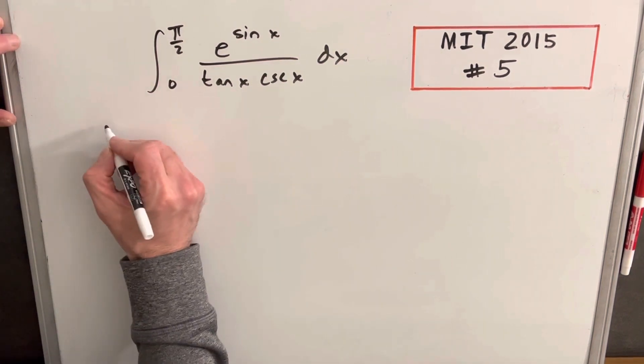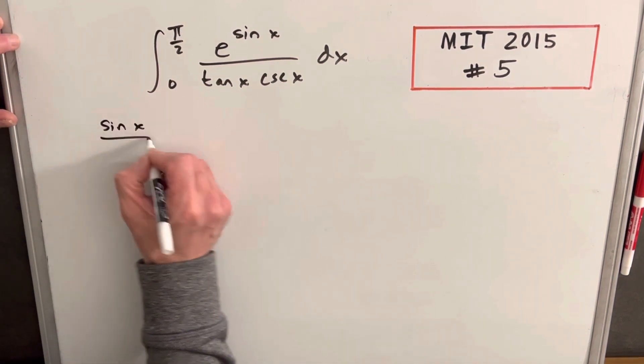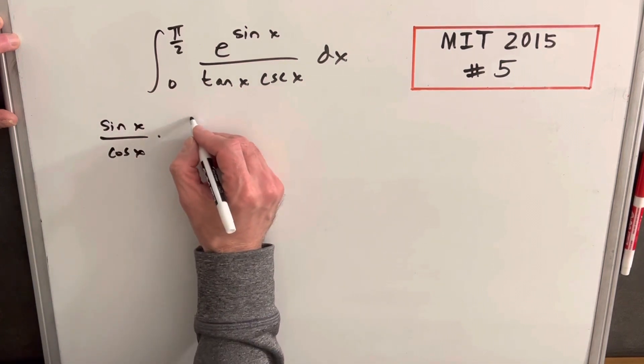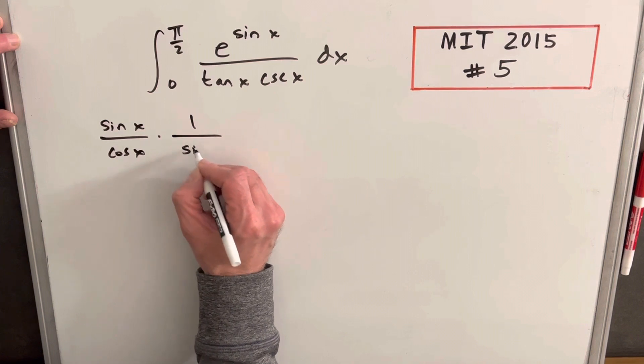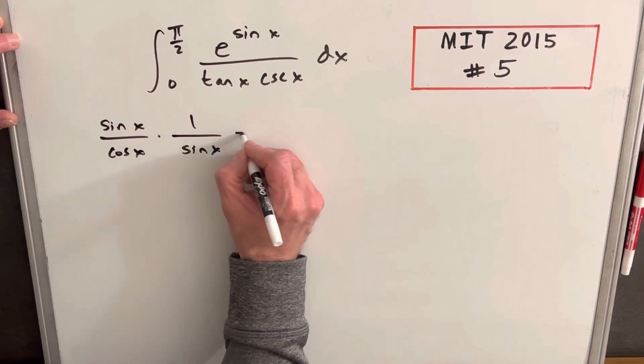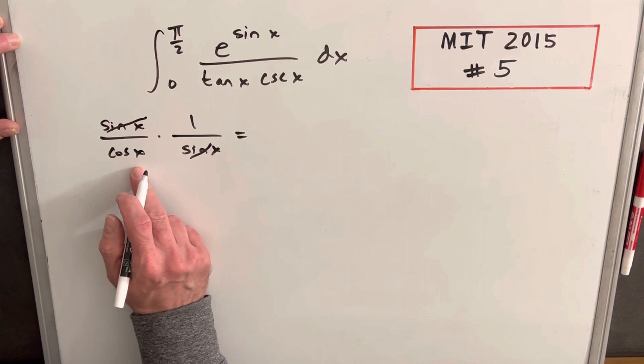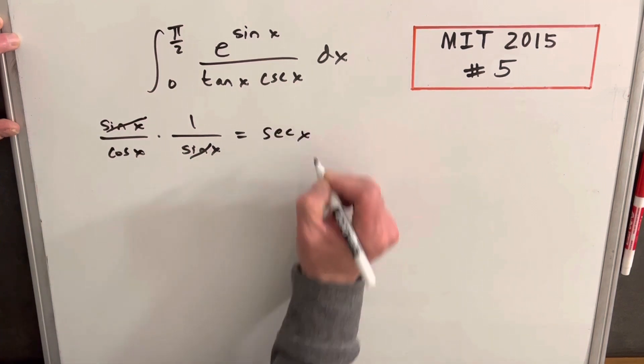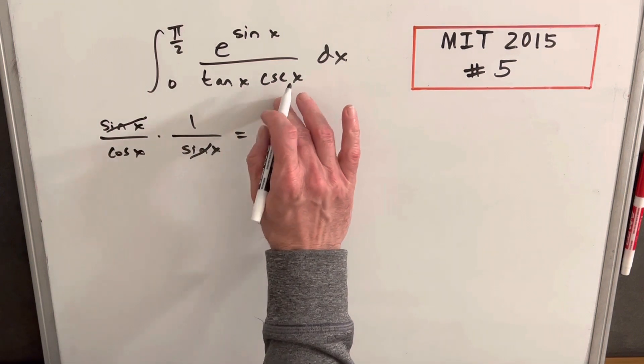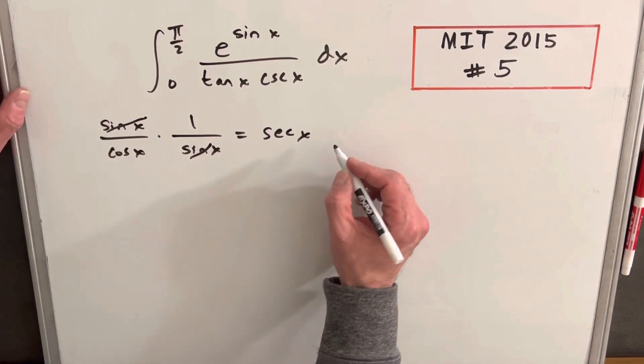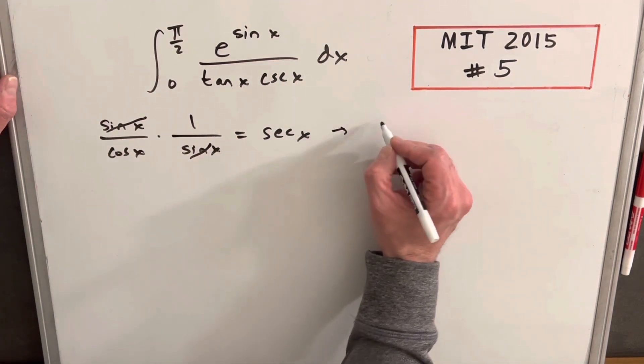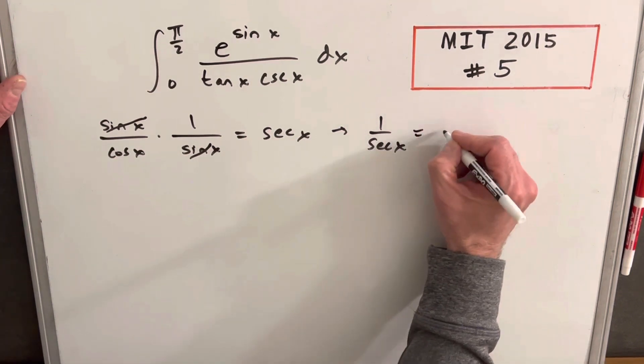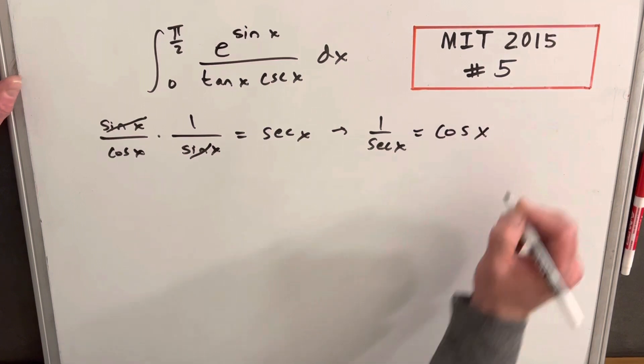Let's do this on the side. So tan x is going to be sine x over cosine x, and cosecant x is 1 over sine x. Multiplying those together, we get a cancellation here, and then we're just left with secant x. But this secant x is in the denominator, so that's the same thing as 1 over secant x. But secant x is 1 over cosine x, so this is actually just cosine x.